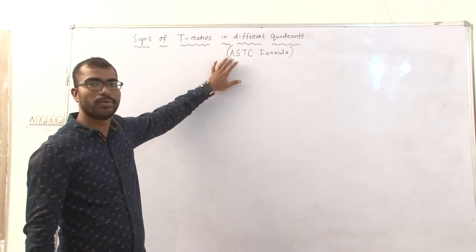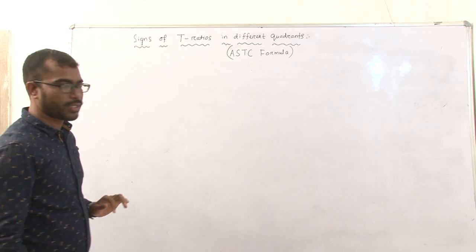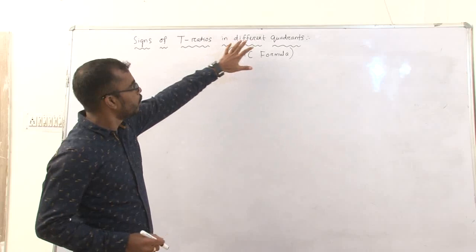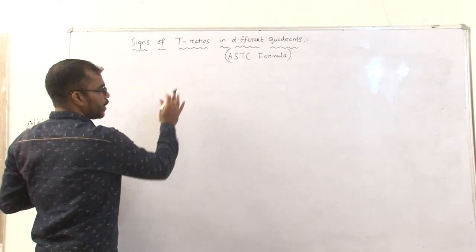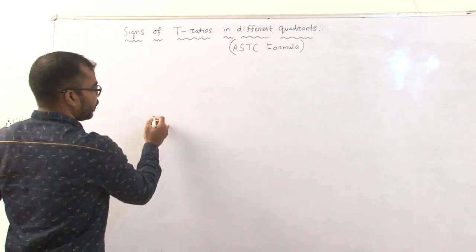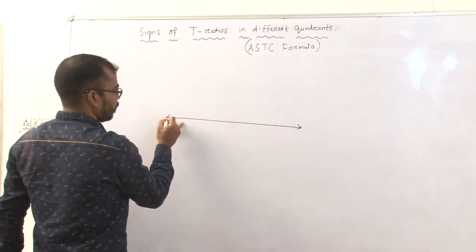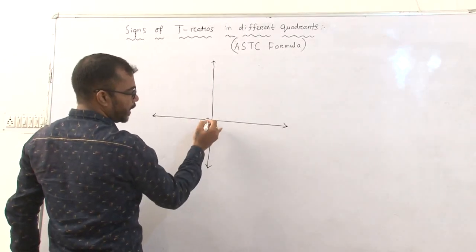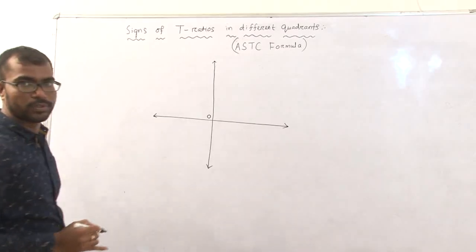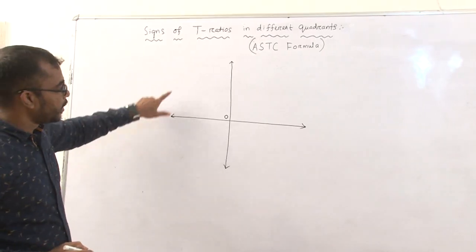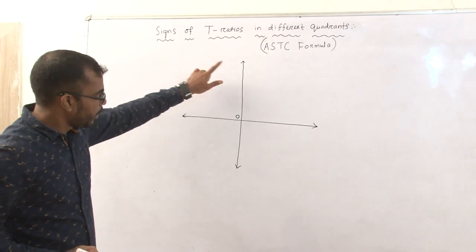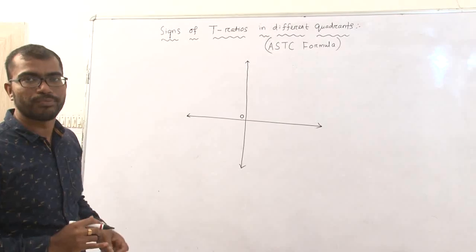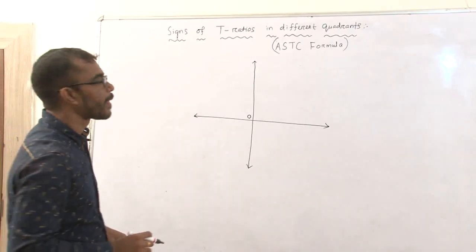So what is the ASTC formula or ASTC rule? First of all, in this session we have to discuss the quadrant. If two lines are perpendicular to each other and intersect at a point, those two lines divide the plane into four parts. Each part is called a quadrant.